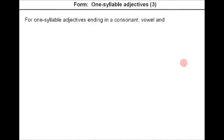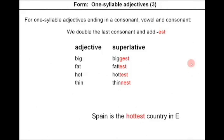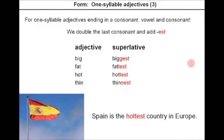For one-syllable adjectives ending in a consonant-vowel-consonant pattern, we double the last consonant and add EST. For example: big → biggest, fat → fattest, hot → hottest, thin → thinnest. Example: Spain is the hottest country in Europe.